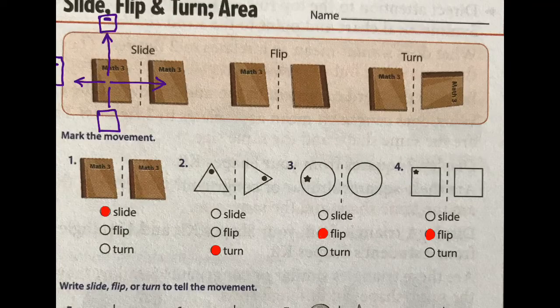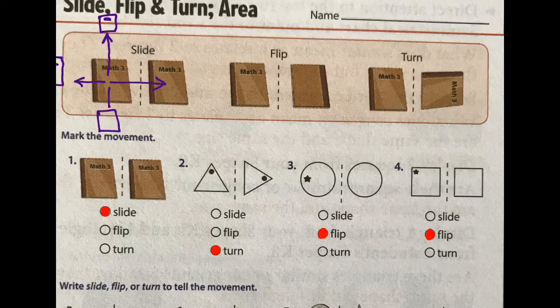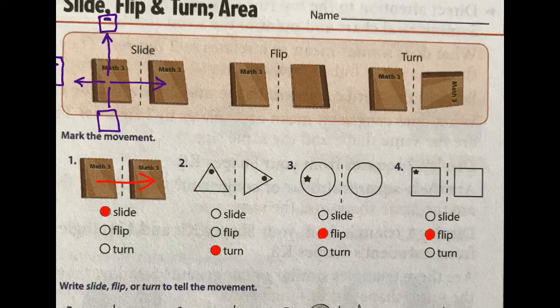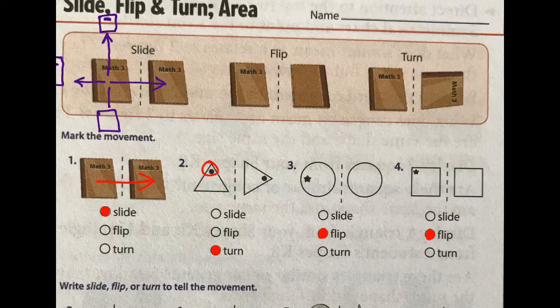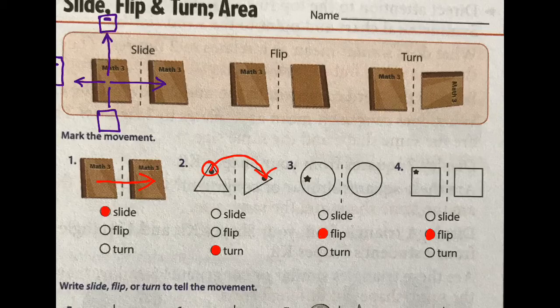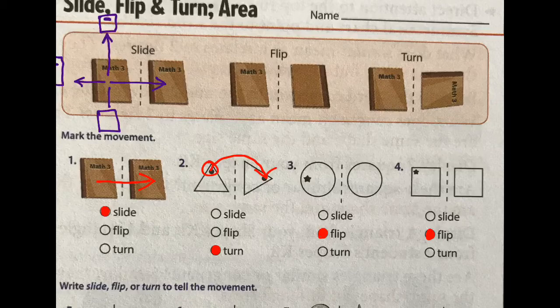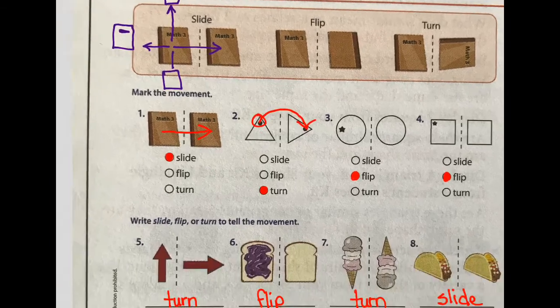Let's look at number one. If you look, the ending position is exactly the same as the starting position. So, it is a slide. Number two is a turn because you can see this top part of the triangle with the dot has been turned that way. Number three is a flip because you're now looking at the back of the circle, and number four is also a flip.